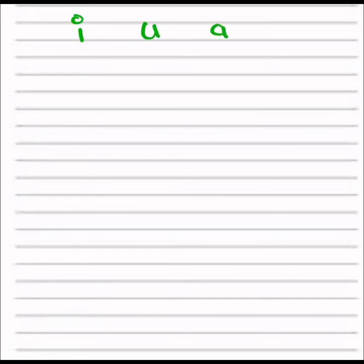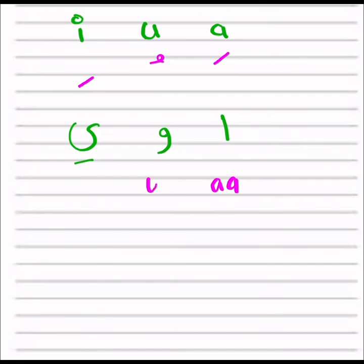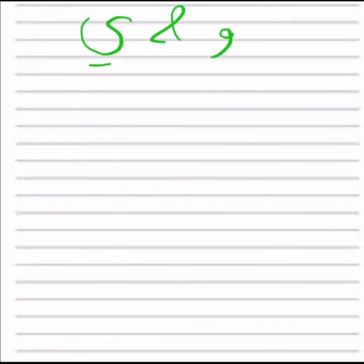Before we end, let's recap what we covered in previous lessons. We studied the three short vowels in Arabic: fatha for 'a,' damma for 'u,' and kasra for 'i' — kasra is always written underneath the letter. We then moved on to the long vowels: Alif is pronounced as a long 'a,' Waw is pronounced as a long 'u' (like 'oo'), and Ya is pronounced as a long 'i' (like 'ee') — giving us 'a,' 'u,' 'e.'